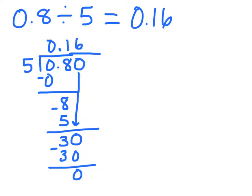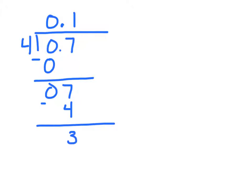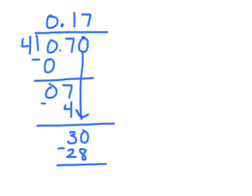Let me show you a couple more examples. The next example is 7 tenths divided by 4. We'll begin by dividing the ones place by 4, which is 0. 0 times 4 gives us 0. Drop down our 7 and bring up our decimal point. Now, how many times will 4 go into 7 in our tenths column? It'll go in once. 1 times 4 is 4. Subtract that away, we get 3. Let's add a 0 to see if we can get rid of that remainder. Drop it down and we get 30. How many times does 4 go into 30? It goes in 7 times. 7 times 4 is 28. Subtract that away to get a remainder of 2.